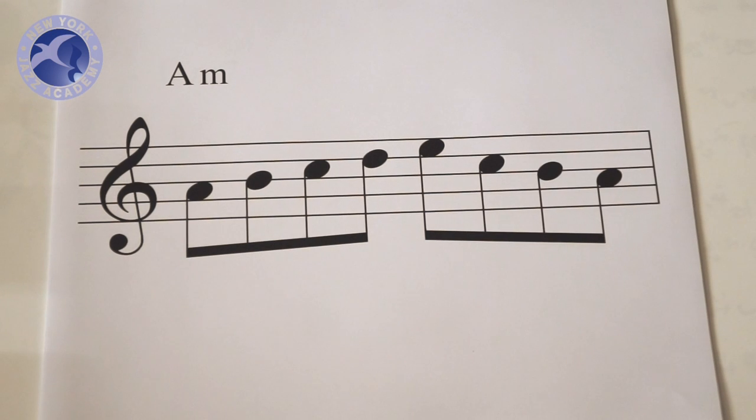Let's look at that line up a half step. Here's the exact same line starting on A minor. Now what we're going to do is use this line to start with to begin our 2-5. So we're going to play this exact line over a D minor 7.